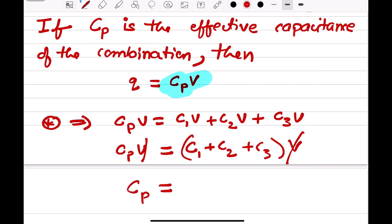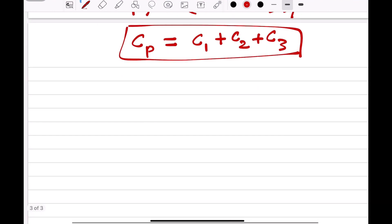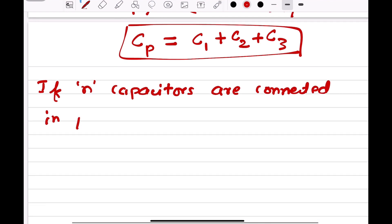Therefore, when the capacitors are connected in parallel, effective capacitance is equal to sum of individual capacitances, C1 plus C2 plus C3. If N capacitors are connected in parallel, then Cp will be equal to C1 plus C2 and so on up to Cn.